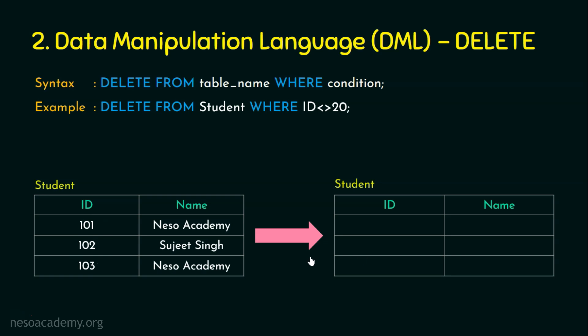All records have id not equal to 20, so this deletes all the data in the table. That's why we must be very careful in choosing the condition. If we have 1000 records and all 1000 have id not equal to 20, all rows will be deleted. This is equivalent to TRUNCATE — all rows are deleted but the table structure still exists — and delete will also not delete the table structure since it deals with data, not structure.